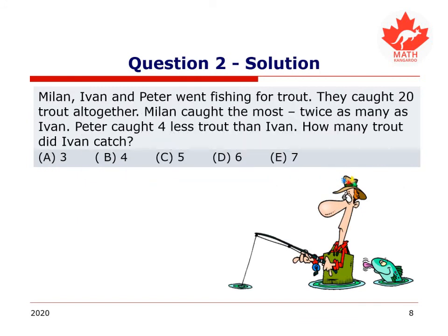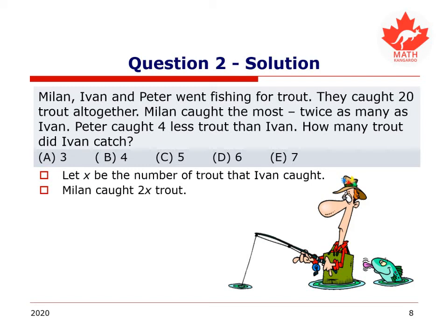Are you ready? Let's see what we can figure out. We need something to label as our x, as our variable. Let x be the number of trout that Ivan caught, just because that seems to be the most popular bit of information in this problem. We've got twice as many as that, four less than that. It's popular. So as mentioned, Milan caught 2x trout, twice as many. Peter caught x minus 4 trout, four less.